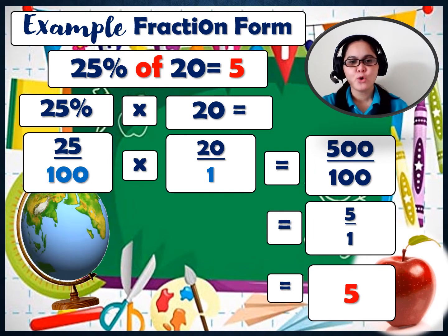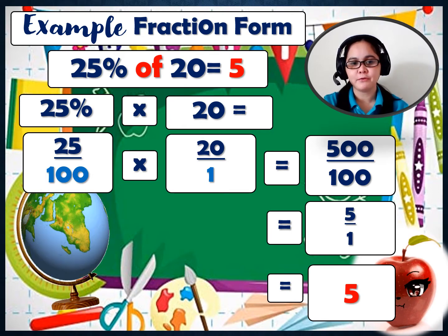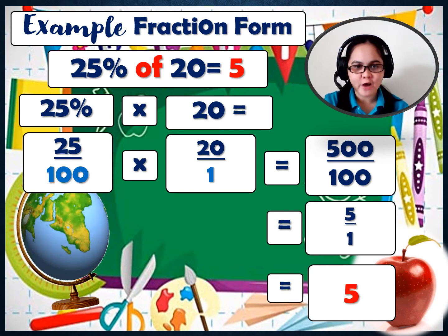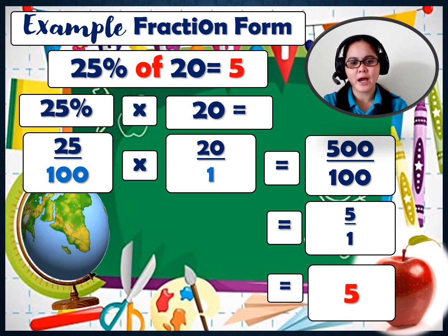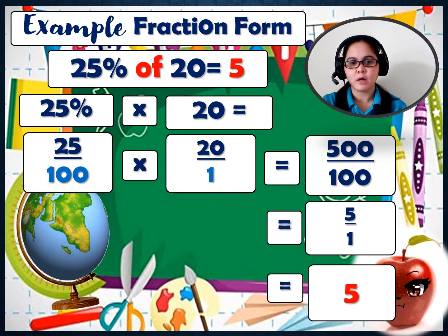Example using fraction form: 25% of 20. Remember, 'of' is equivalent to multiply or times. So we replace 'of' with times: 25% times 20. Before we multiply, we need to change the percent into fraction form: 25 over 100. So we have 25 over 100 times 20 over 1. 25 times 20 equals 500; 100 times 1 equals 100. So 500 over 100 simplifies to 5. Meaning we have 5 out of 20.